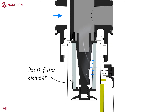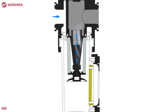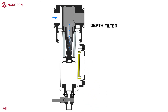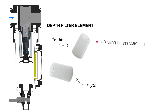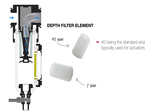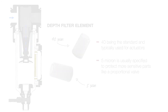The air is now directed through the depth filter element that not only stops particles but long strands too. Filter elements are rated on their micron size — this is the size of particle it will stop. The two options that Norgren offer are 40 micron and 5 micron, with 40 being the standard and typically used for actuators. 5 micron is usually specified to protect more sensitive parts like a proportional valve. The filtered air then leaves through the outlet to carry on downstream.